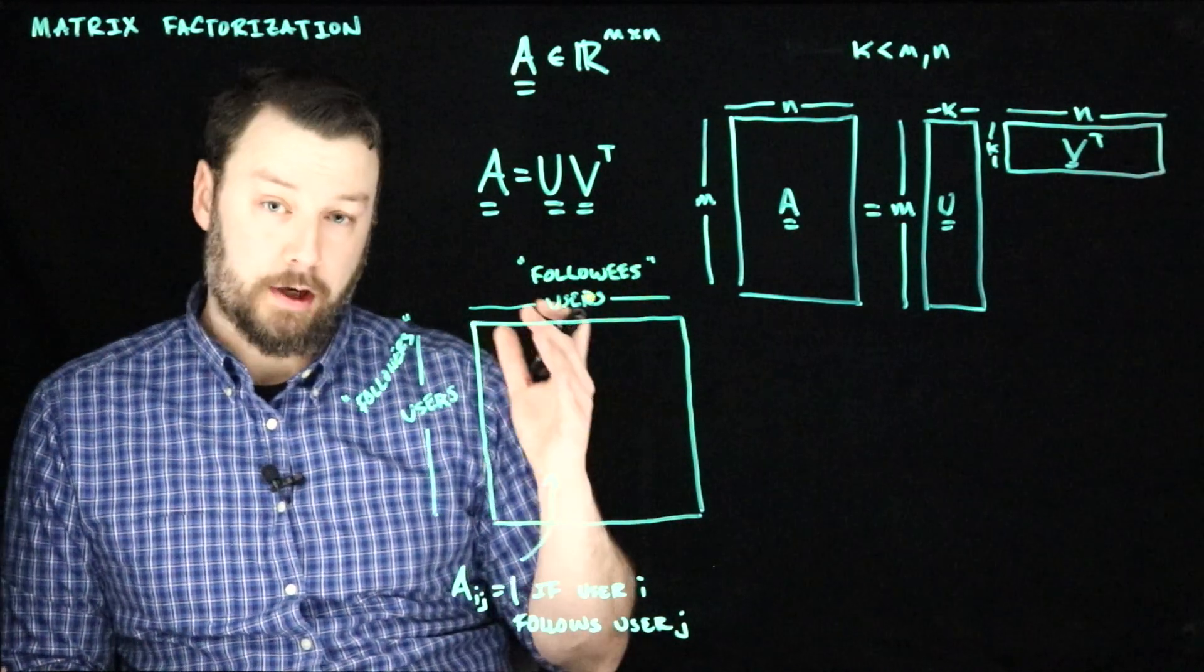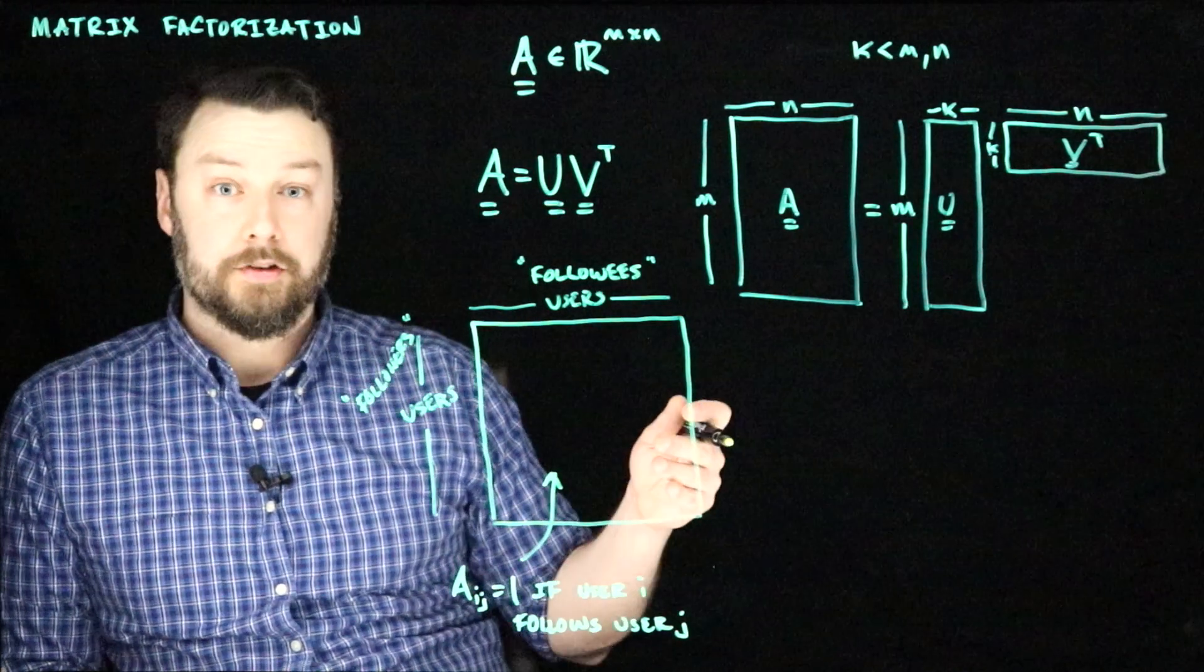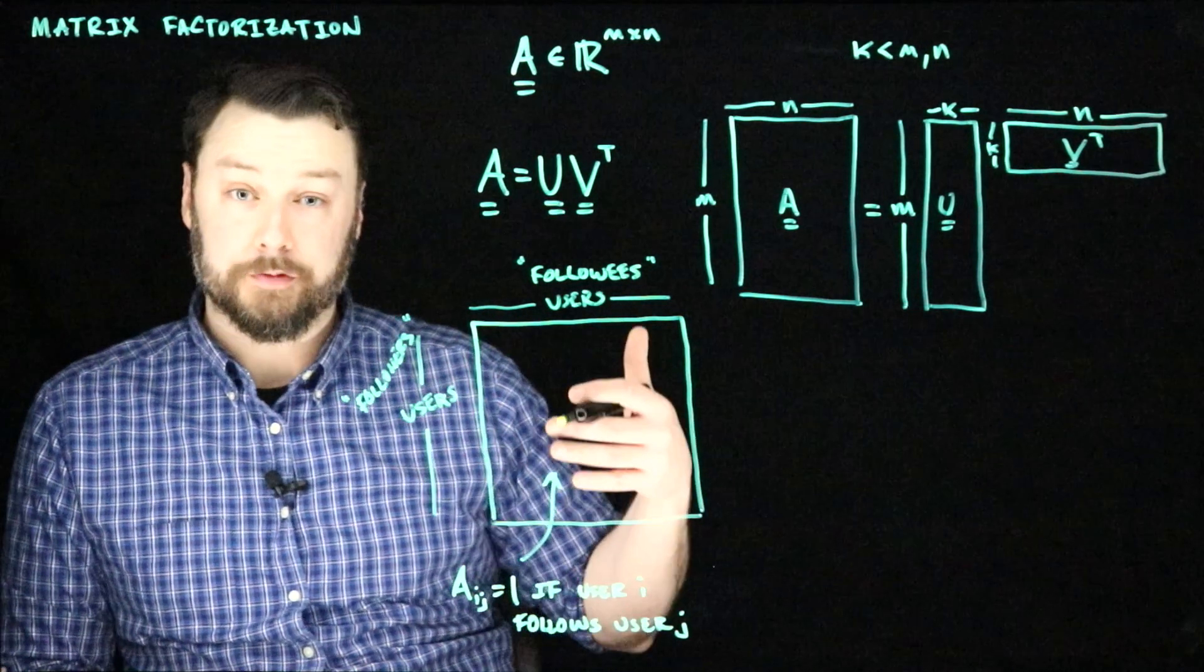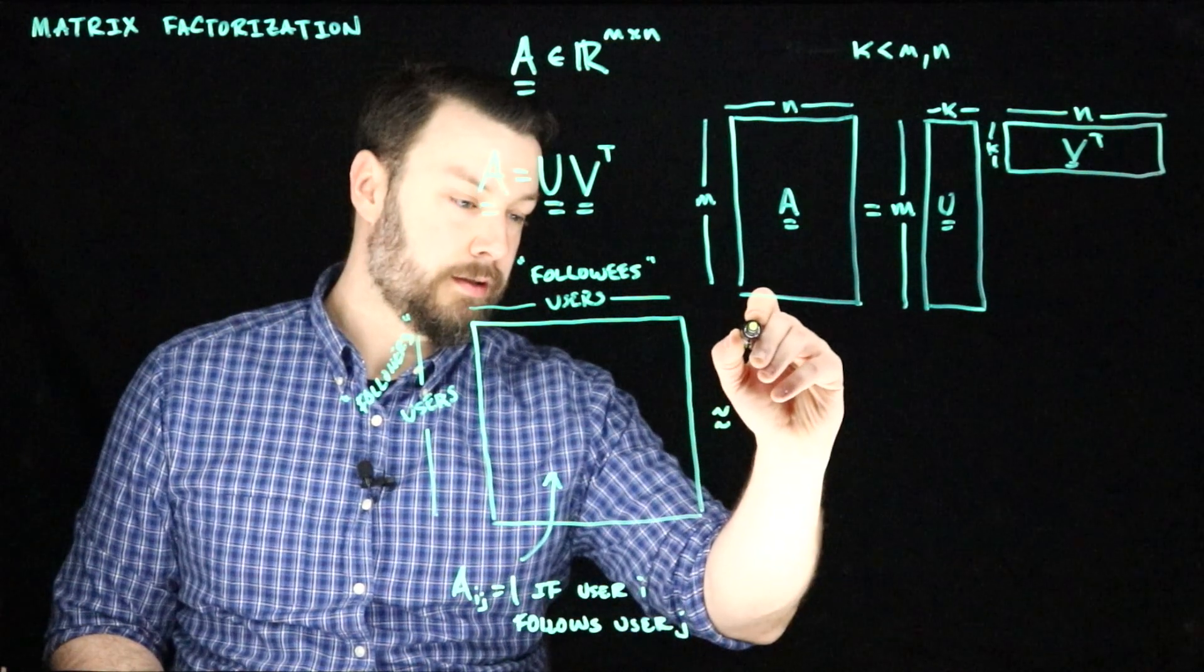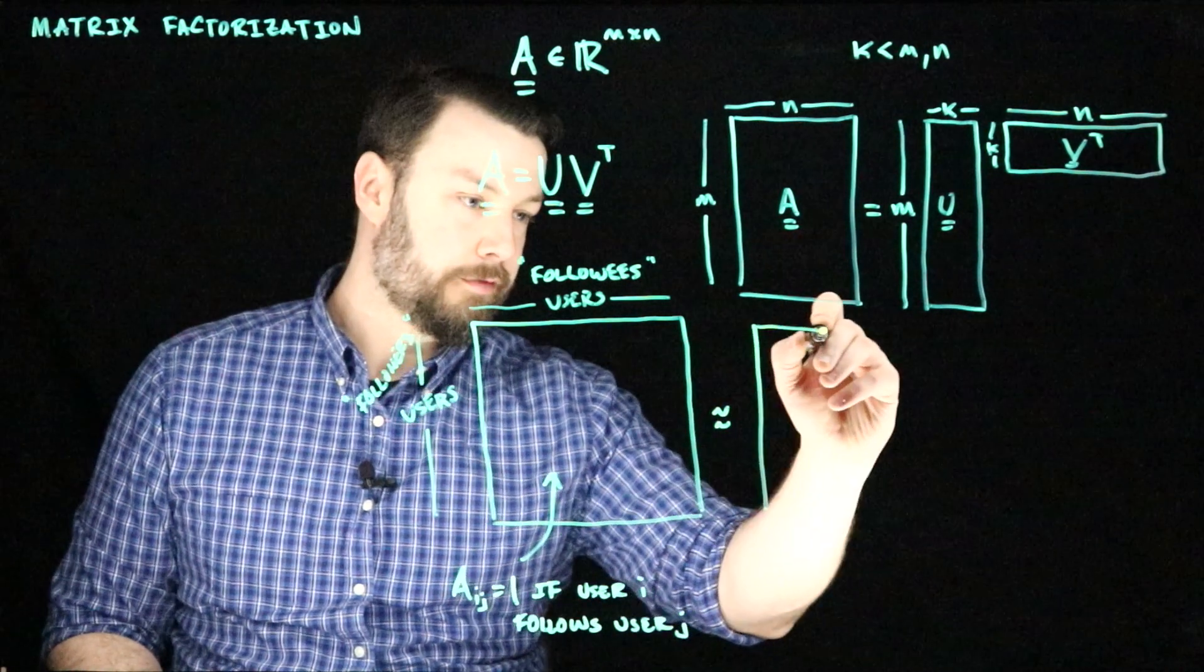Again, if we've tried to approximate this in a low rank way, the hope is that we'll discover different kinds of communities and different kinds of interests. As before, we imagine that this is going to factorize.